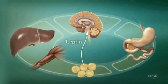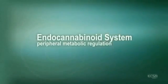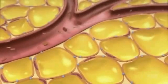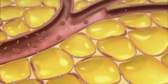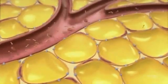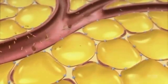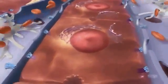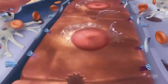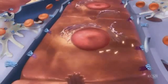An increase in the adiposity hormone leptin decreases endocannabinoid levels in the hypothalamus and decreases food intake. ECS regulation of peripheral metabolism influences energy balance. Stimulation of the ECS increases food intake and adiposity. Conversely, blocking CB1 receptors reduces food intake and adiposity. In the liver, ECS stimulation can lead to lipogenesis through the activation of hepatic lipogenic enzymes and increased fatty acid synthesis.